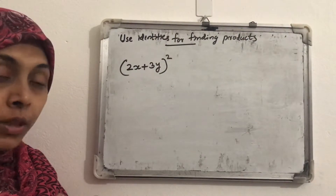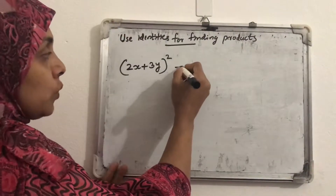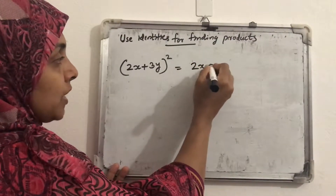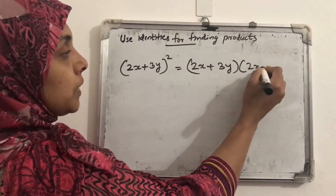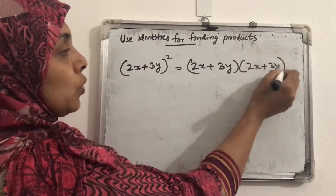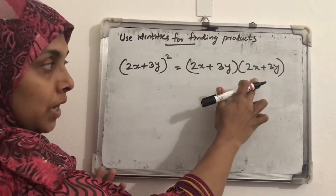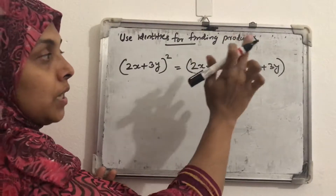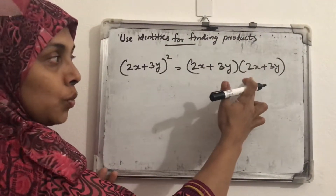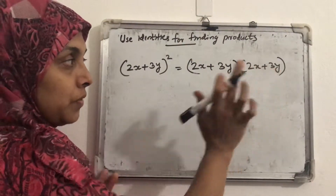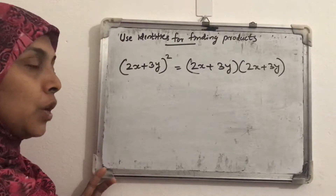Without using identities, if we want to find out the product, we write (2x + 3y) into (2x + 3y) and use normal multiplication. 2x first multiply with 2x gives 4x², then 2x multiplied by 3y, then 3y multiplied by 2x and 3y multiplied by 3y. Then we take the sum. That is the normal multiplication.